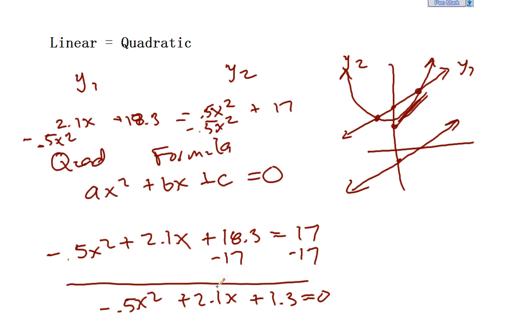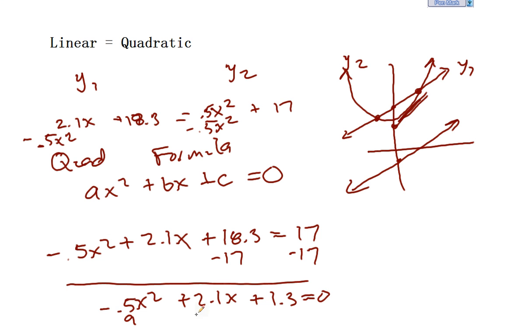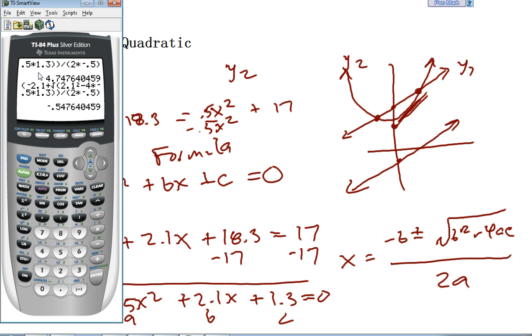So how would we do that? Well, let's do quadratic formula. So I've already plugged in the numbers here. Here we have a, b, and c. And we use x equals negative b plus or minus the square root of b squared minus 4ac all over 2a. And so if we do the minus the square root, we get 4.7.